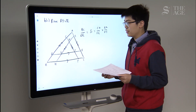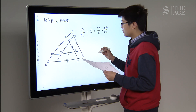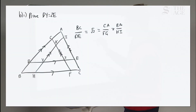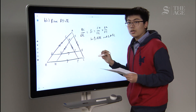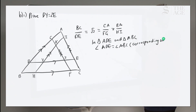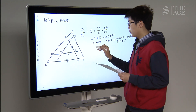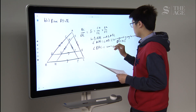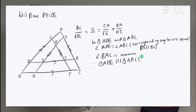The way you want to first approach this question is you notice that there are a lot of similar triangles — three main pairs. So let's start by proving one of them. In triangles ADE and ABC, you want to prove similarity. Angle ADE equals angle ABC because corresponding angles are equal, since DE is parallel to BC. Also, angle BAC is common. Therefore, triangle ADE is similar to triangle ABC — the reason being that it's equiangular.